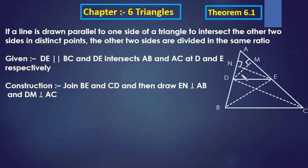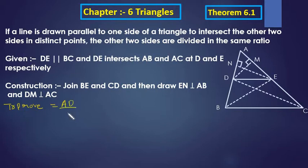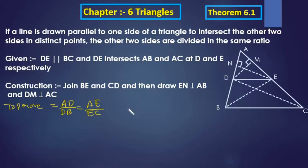Now, what do we have to prove? We have to prove that AD upon DB is equal to AE upon EC. Meaning these two sides will be divided into the same ratio — the ratio of both sides will be equal.